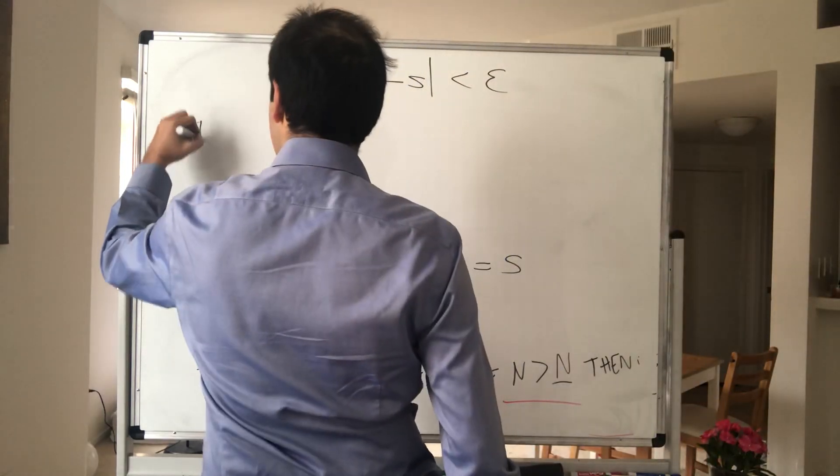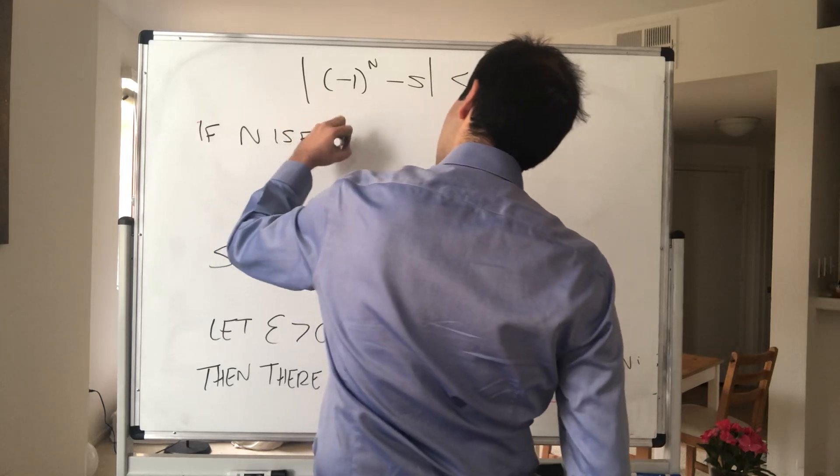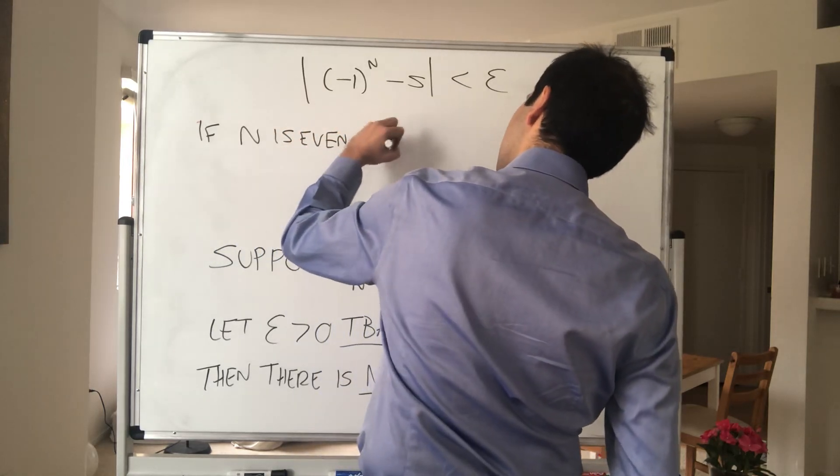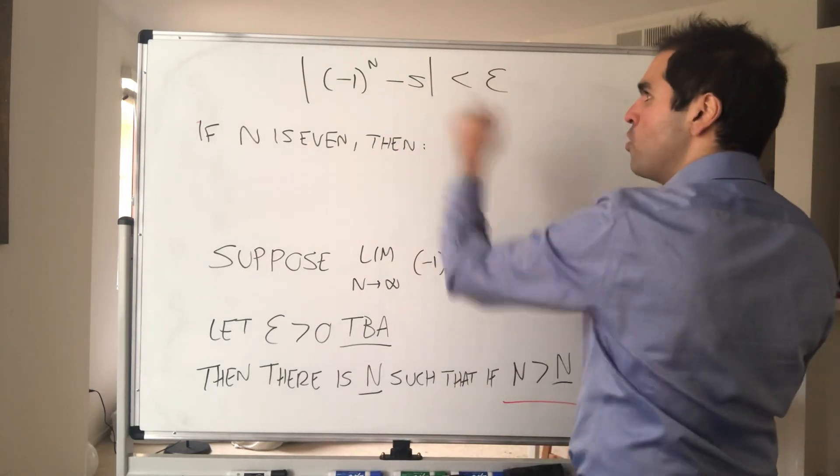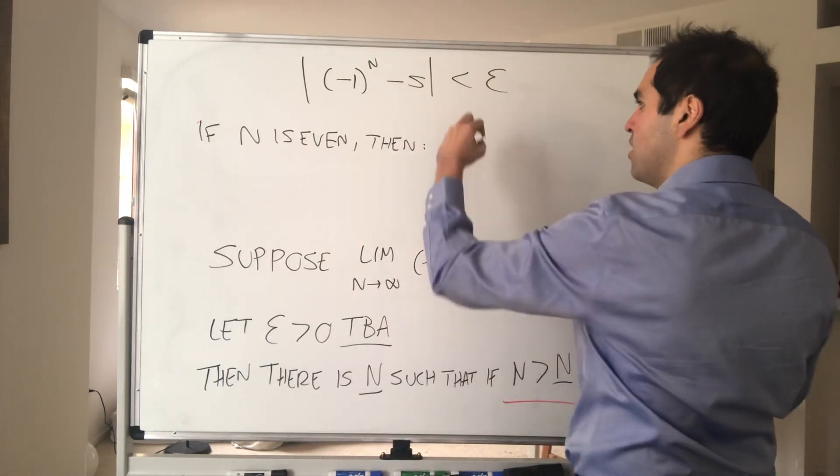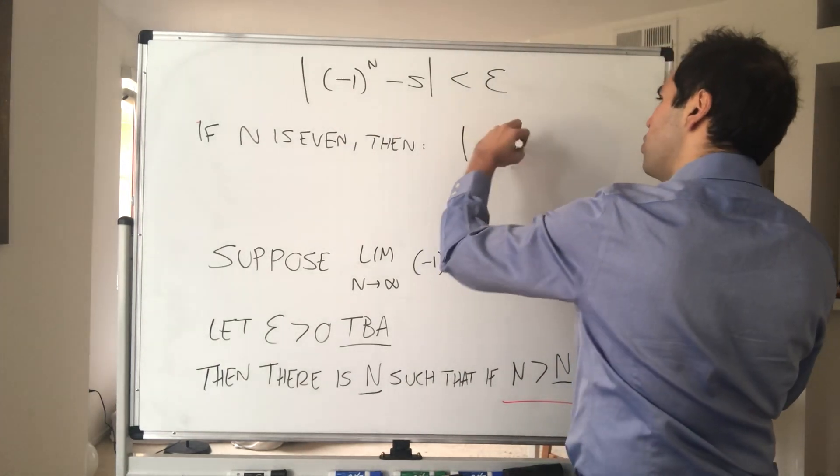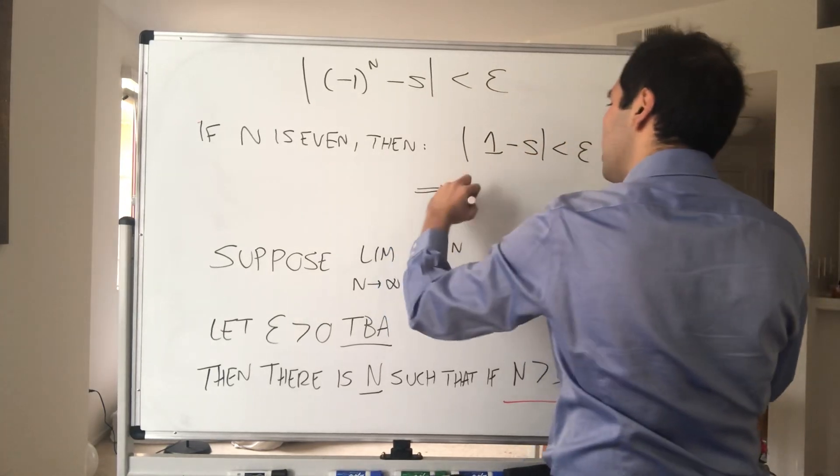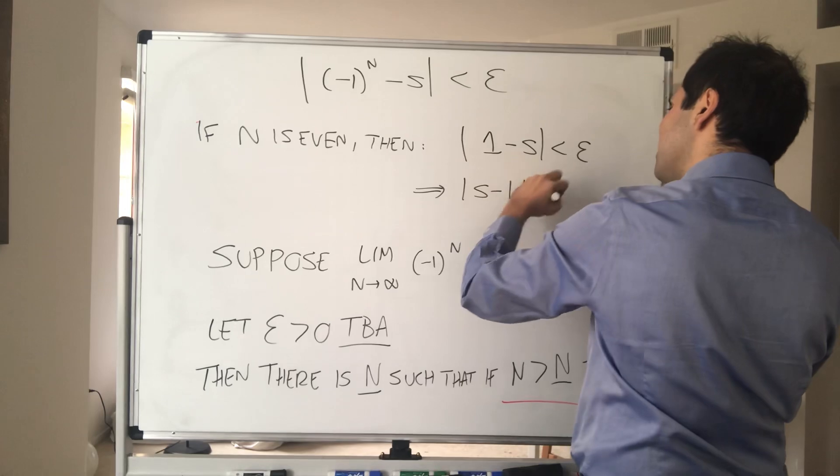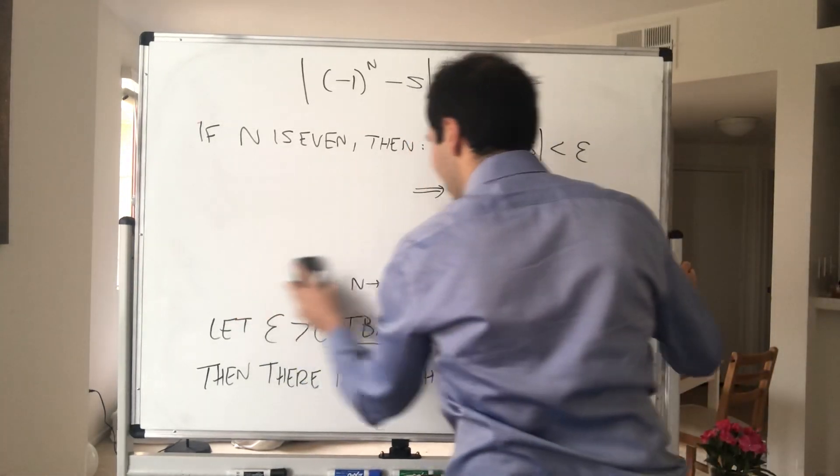So if n is even, then what do we get? We get |(-1)^(even power) - s| < epsilon, so indeed, this just becomes 1. So |1 - s| < epsilon, and this implies |s - 1| < epsilon, and we get a very nice bound for s.